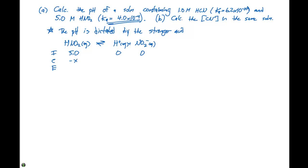The change row is minus x, plus x, and plus x. That gives equilibrium concentrations of 5.0 minus x for HNO2, and x for both H plus and NO2 minus. Our Ka expression is therefore x squared divided by 5.0 minus x.